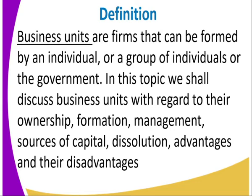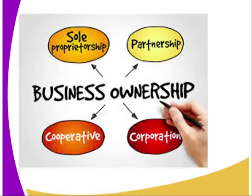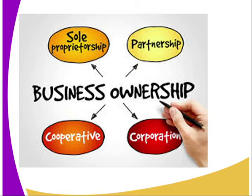We are starting with the first one — that is sole proprietorship. We have classified these business organizations according to their ownership: who owns the business, who owns the firm. We have sole proprietorship, which is owned by only one person. We also have partnership, cooperative, and corporations.